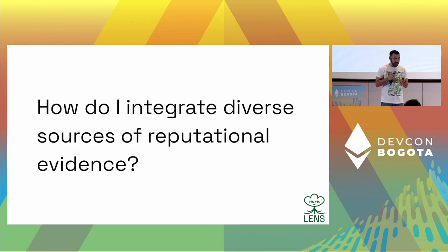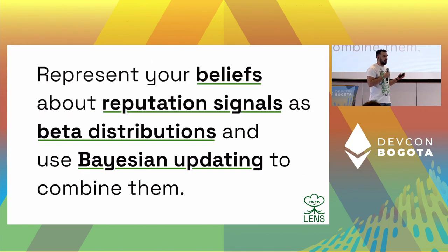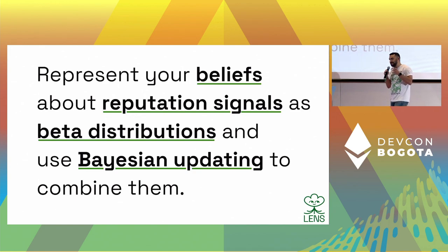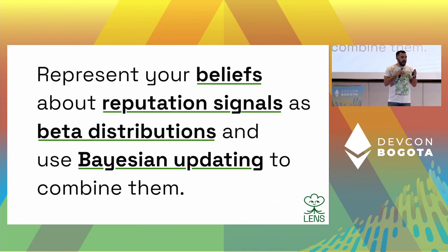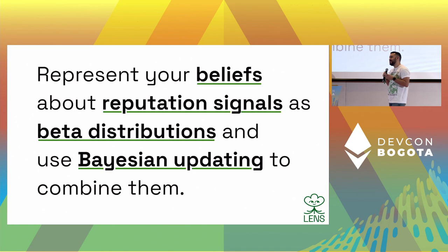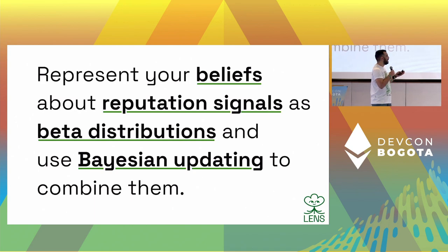My whole talk really is in this slide. The answer to the question I just asked is: what I want you to do is represent your beliefs about your reputational signals as beta distributions and then do Bayesian updating to combine them, and I'll sort of explain what all these things mean.